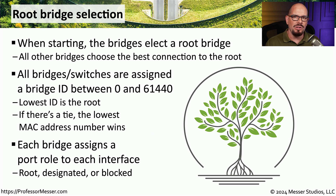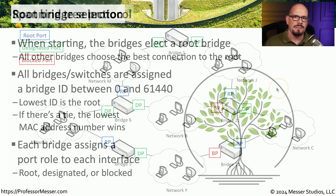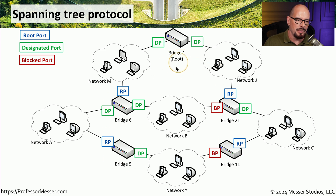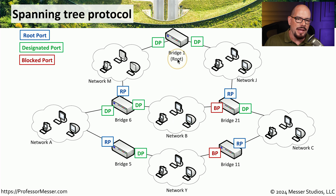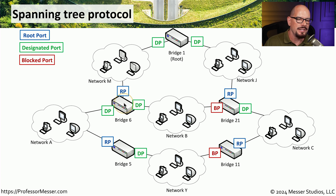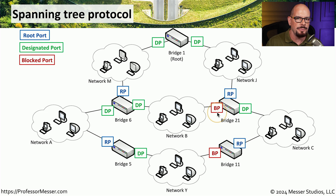Once the root bridge is elected, all other switches configure their settings to know exactly how to communicate back to this root bridge. In this example network, we have bridge one, bridge six, bridge five, bridge 21, and bridge 11. Bridge one at the top is the root bridge, and it has two designated ports connecting it to the rest of the network. All other switches are configured with a root port — the port you take to get back to the root bridge — and may also have designated ports that are active and passing traffic, as well as blocked ports that Spanning Tree has disabled to prevent loops.